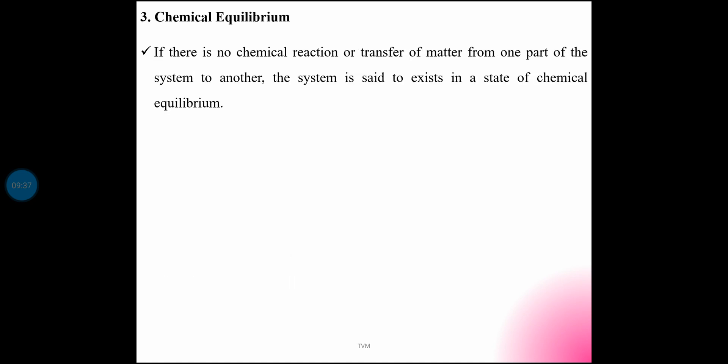Chemical equilibrium: if there is no chemical reaction or transfer of matter from one part of the system to another, the system is said to exist in a state of chemical equilibrium.